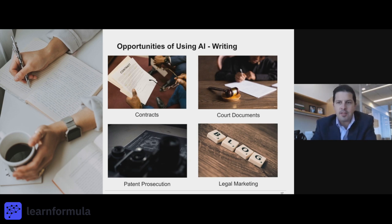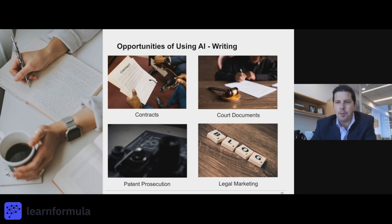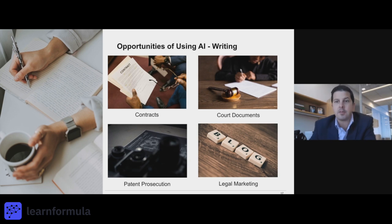A client might ask you to add a warranty of non-infringement, or a further assurances clause, or something along those lines. We all have our examples, things we've used in the past, but AI can really help you craft that in a way that you're not borrowing from old documents. The process of going from a client request to having it in writing in the legal document itself can go a lot quicker than simply finding your favorite further assurances clause and adding it to a contract.